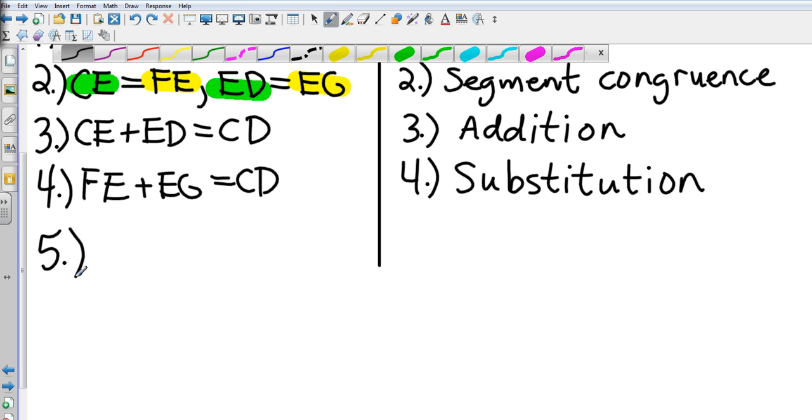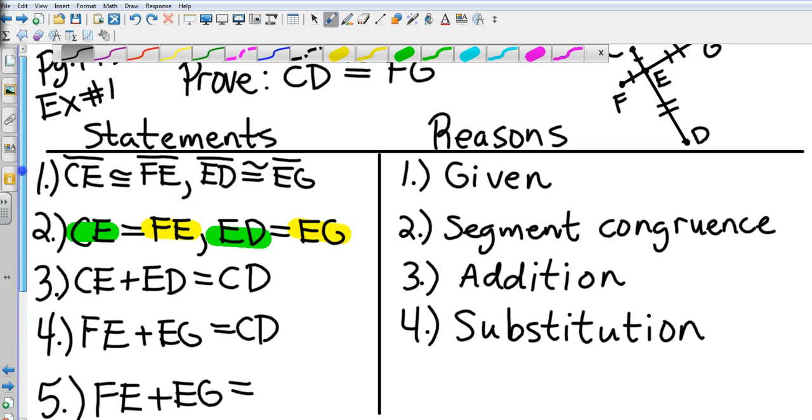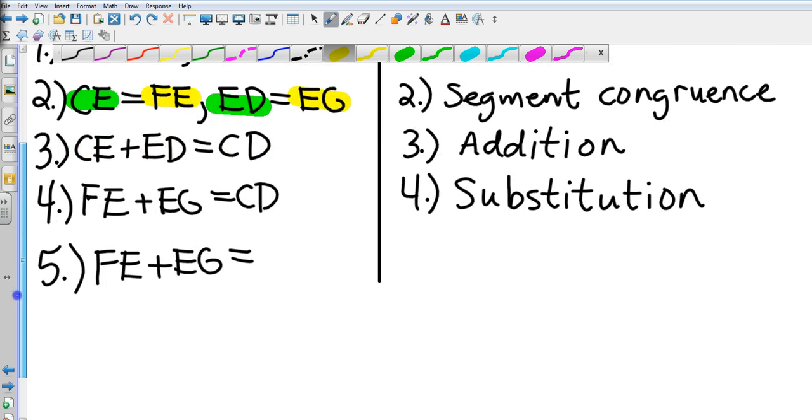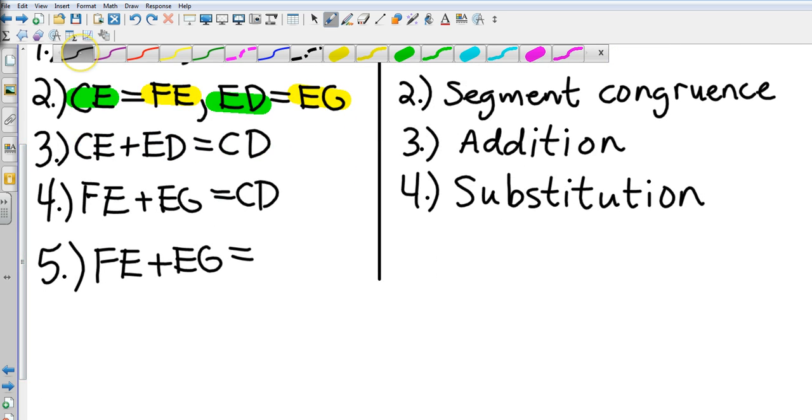Now you can probably see where this is going here, because both of those things equal CD. Then we also know that FE plus EG equals the entire segment. Okay, FE and EG equals the entire segment which is FG, and the reasoning for that is going to be segment addition, just like it was in step three.